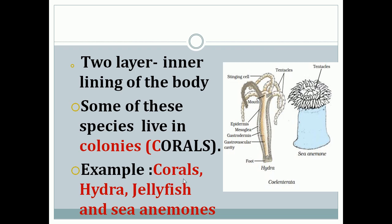These organisms live in water and show differentiated body design with two cell layers — one outside and one forming the inner lining. Some species can live in colonies, meaning they live in groups. An example of colony-living organisms is corals.